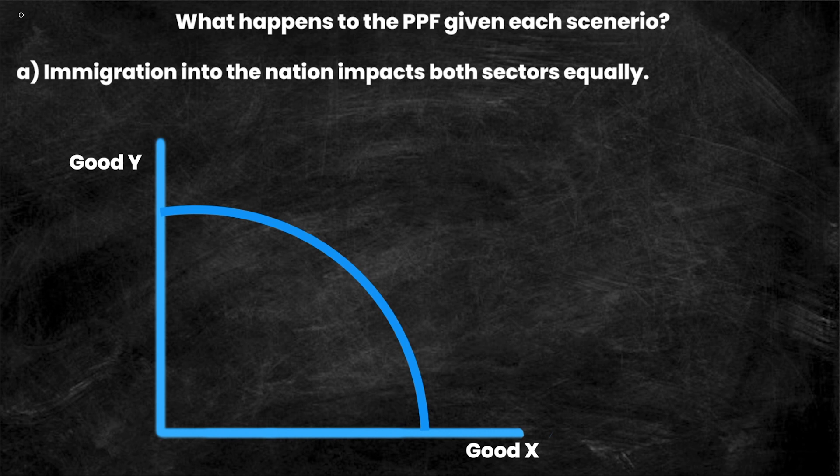Hey everyone and welcome back to the channel. Today we're going to be going over another homework question from the beginning of your introductory macro or microeconomics courses. We're going to be looking at what happens to the PPF given each scenario — four different scenarios — with good Y on the y-axis and good X on the x-axis. With that said, let's get into it.